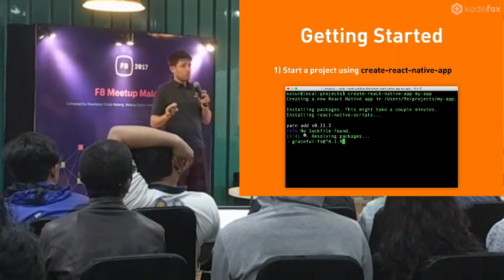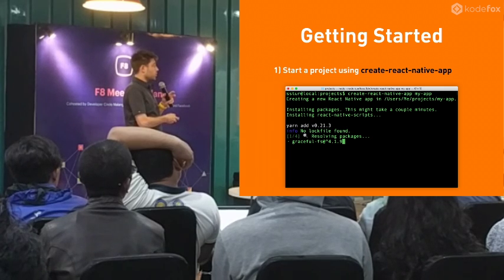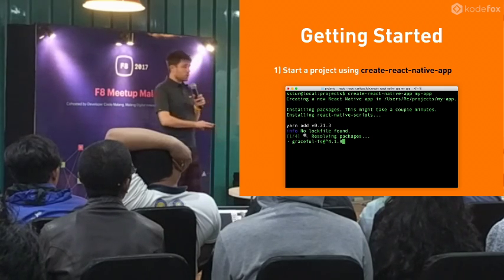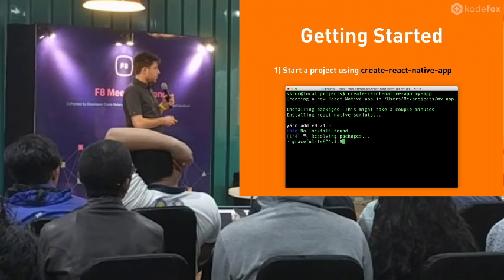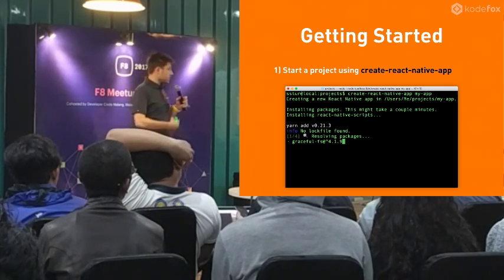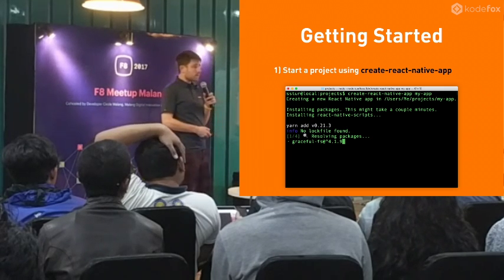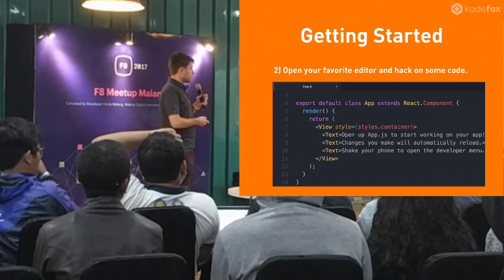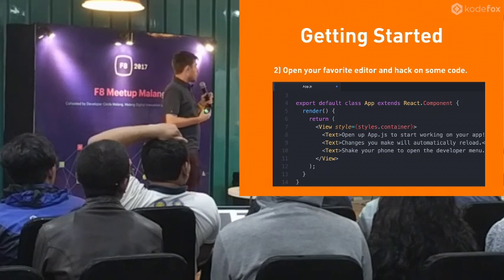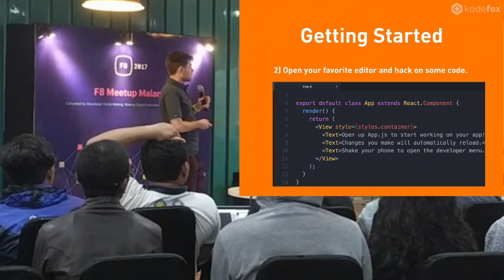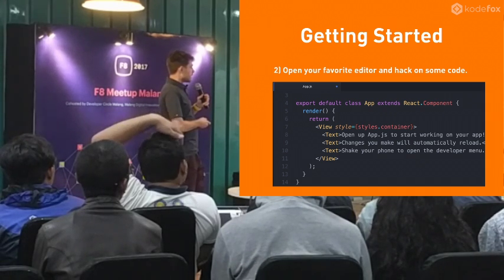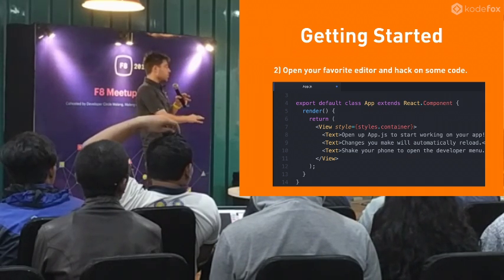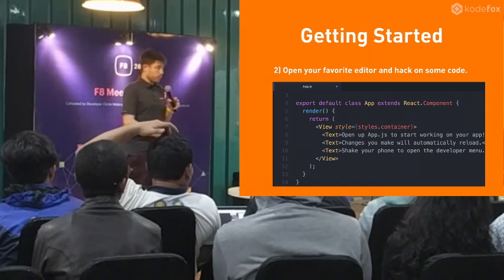We'll look at the easiest way to get started with React Native, which is a tool called Create React Native App. You go into your terminal — this works on Mac or Windows — and you just say 'create-react-native-app' followed by the name of your app. It starts installing some packages and takes about 35 seconds. When you first open app.js, you get this class, and inside the render method you can start putting Views and Texts together.